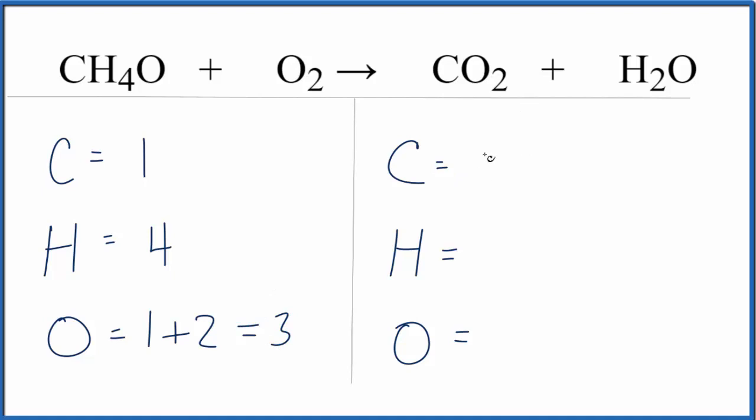On the product side, we have one carbon, two hydrogens, and then two of the oxygens here, plus we have the one right here. That gives us a total of three. So it looks pretty good that most things are balanced here. Let's see what we can do.